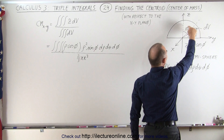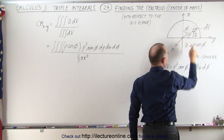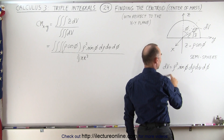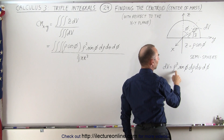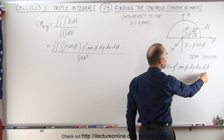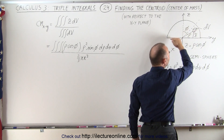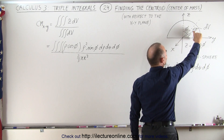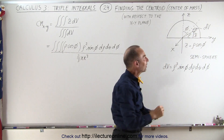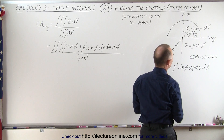Any particular volume element dV, which in spherical coordinates can be expressed as rho squared times sine of phi, d rho, d theta, d phi. The distance to that element from the x-y plane we'll call z with a little squiggly line on it, which means that is the center of mass of that little volume element.